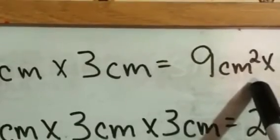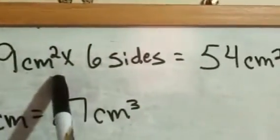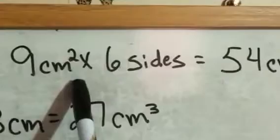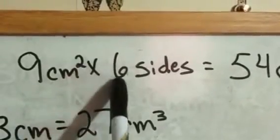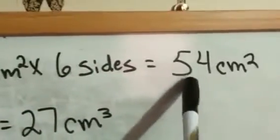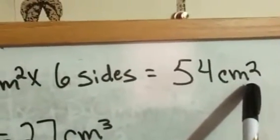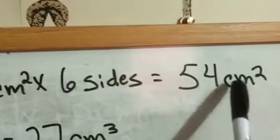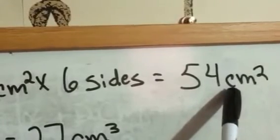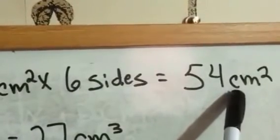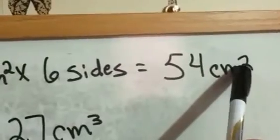Next, you have to multiply that by the six total sides that are there. So you would take that nine centimeters squared times six sides, and that gives you 54 centimeters squared, or square centimeters as some people prefer to say it. Now, once you have that done, this number right here is your surface area, and it is a two-dimensional measurement, hence the number two there.